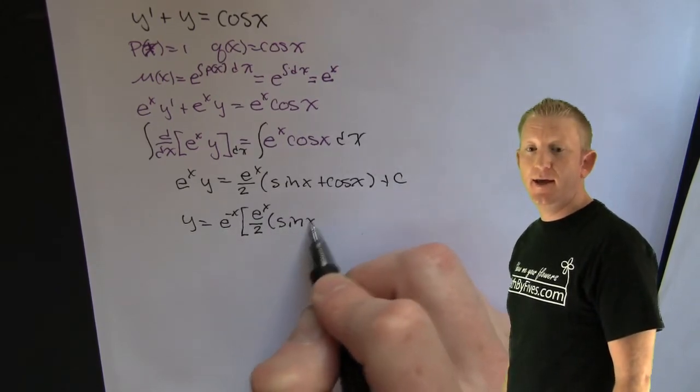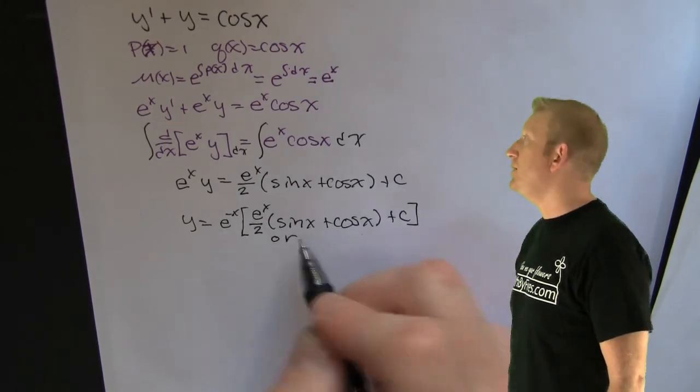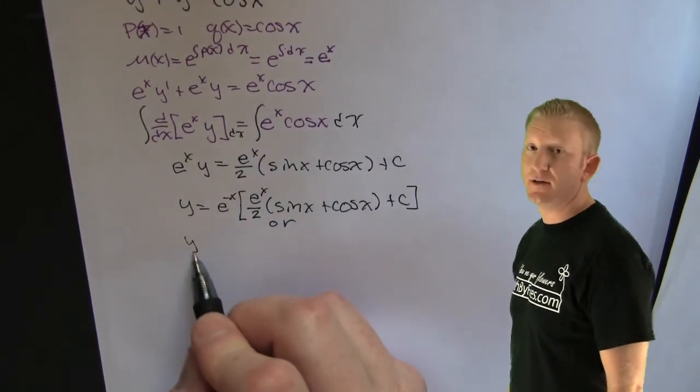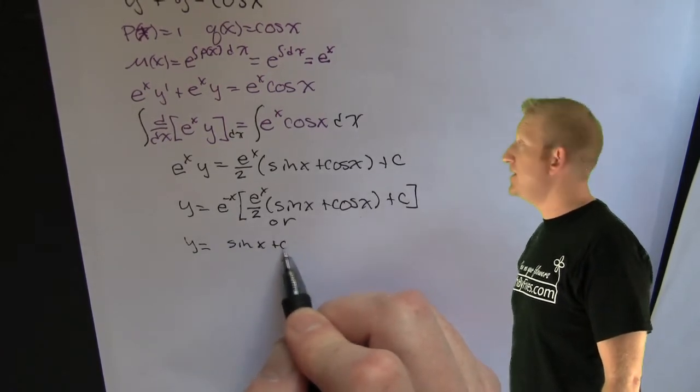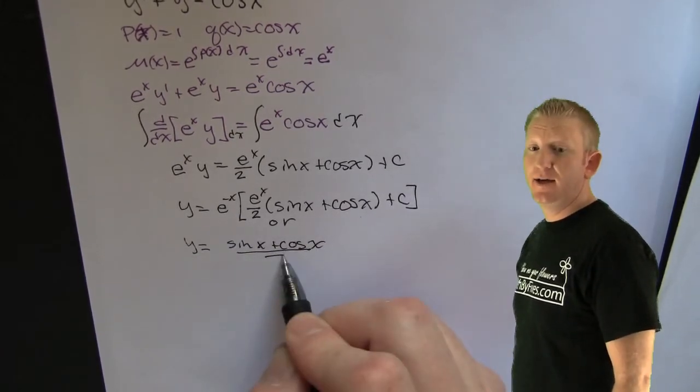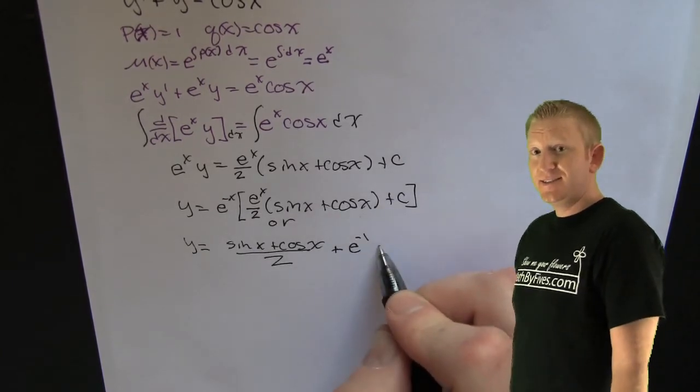Hence on the right hand side getting e to the minus x. And he adds the c, the constants of integration. Finish him. One other form. He wants to go ahead and distribute that function in there. And he does, getting rid of the e to the x on that one side. And he has that constant squeeze it in there. And he's done.